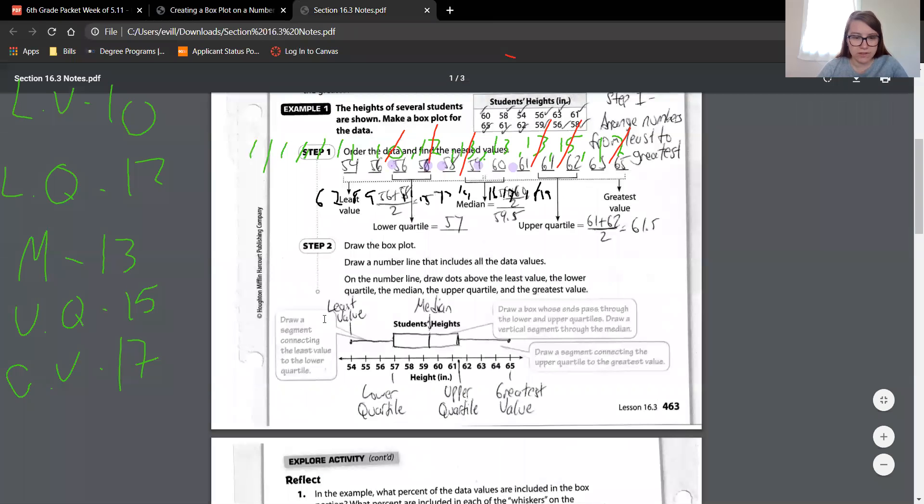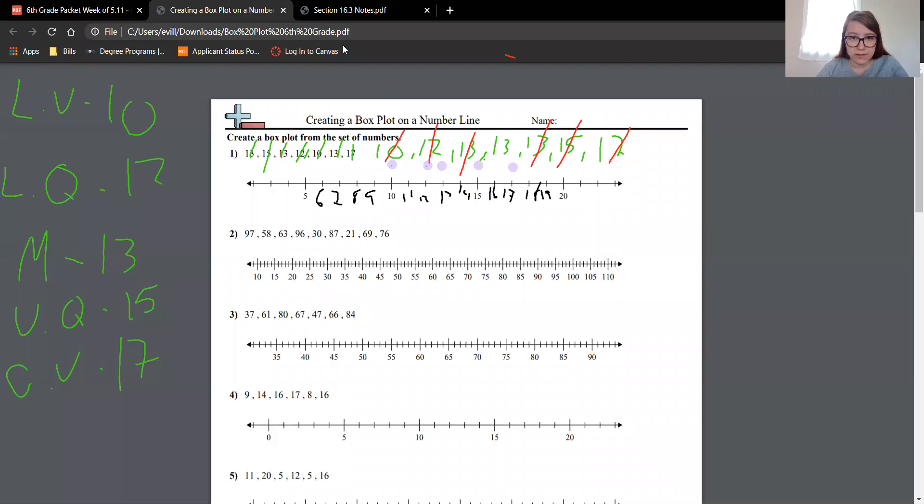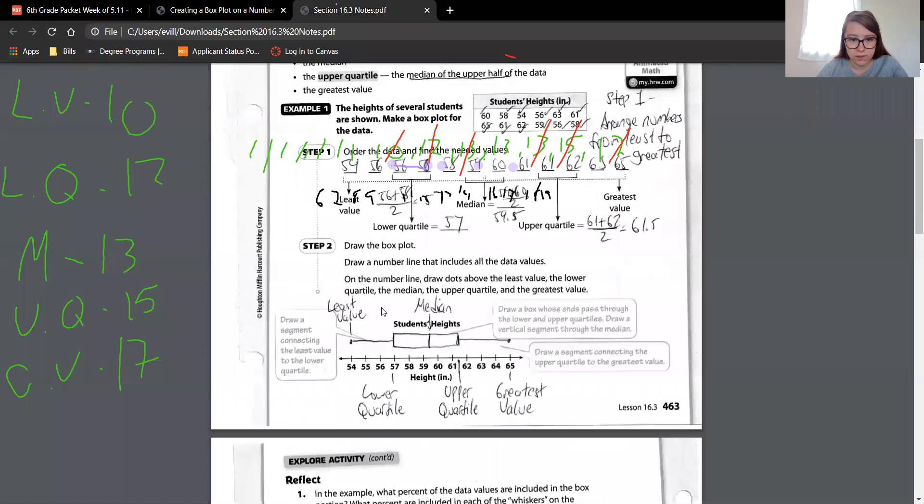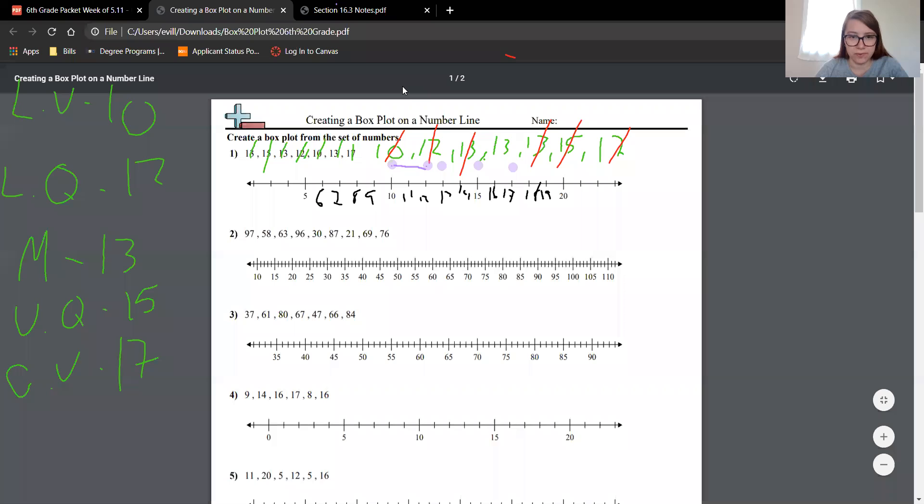Then it says draw a segment or a line connecting the least value to the lower quartile. All right, least value to lower quartile. Now draw a box that ends past through the lower and upper quartiles. So we need to draw a box that gets the lower and upper quartiles. So lower quartile is 12 all the way to the upper quartile, which is 15. Yours will probably look better because you're not drawing on a computer, but if it doesn't, that's okay too.